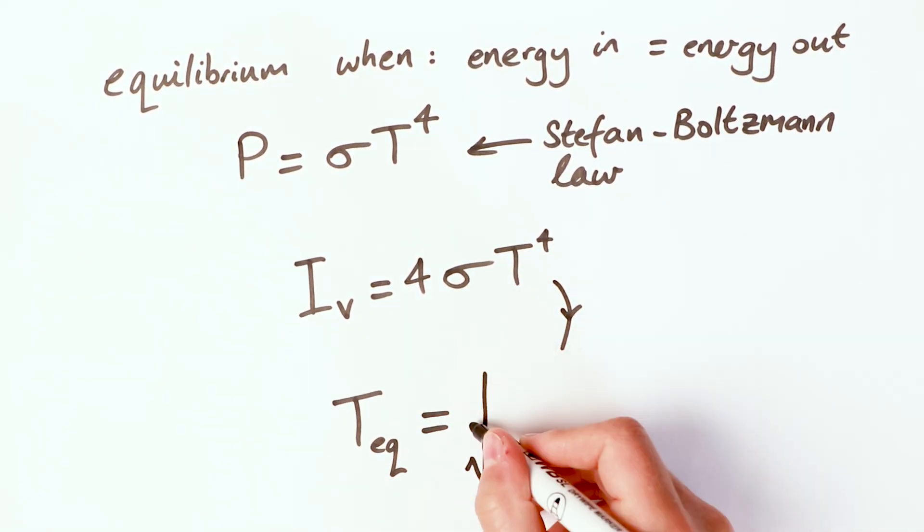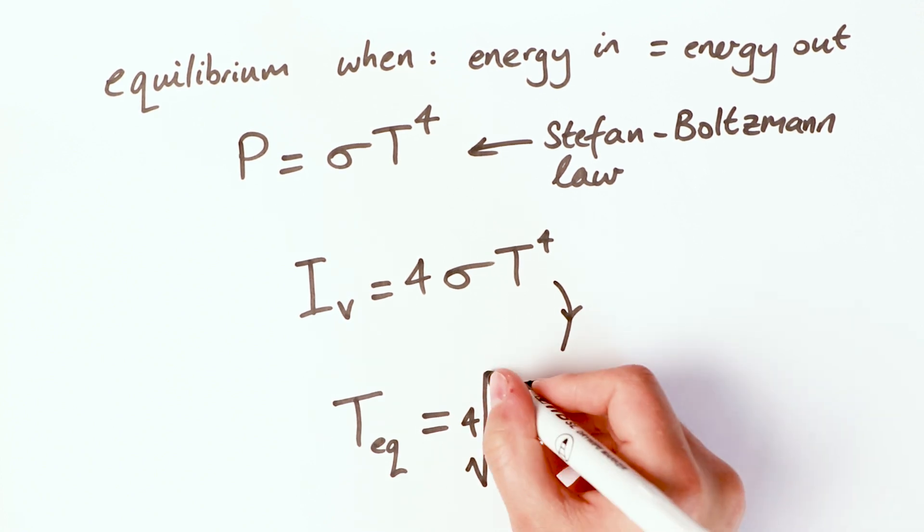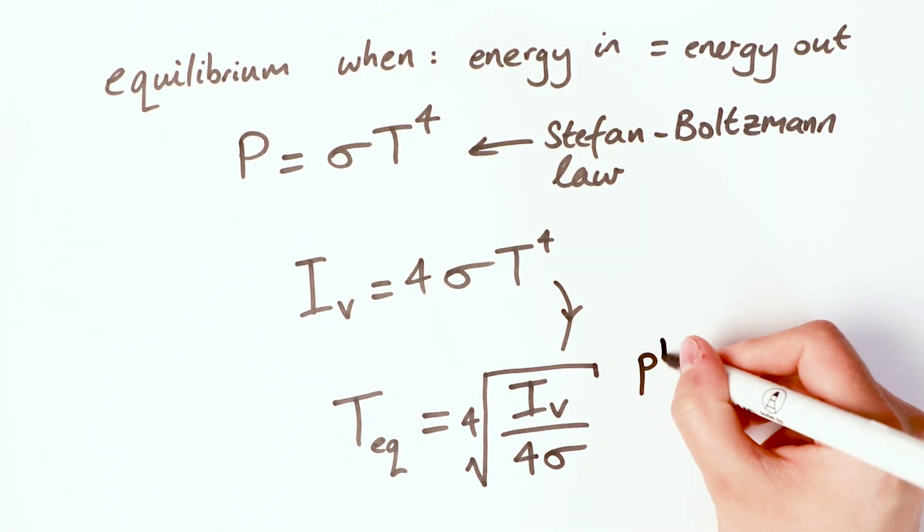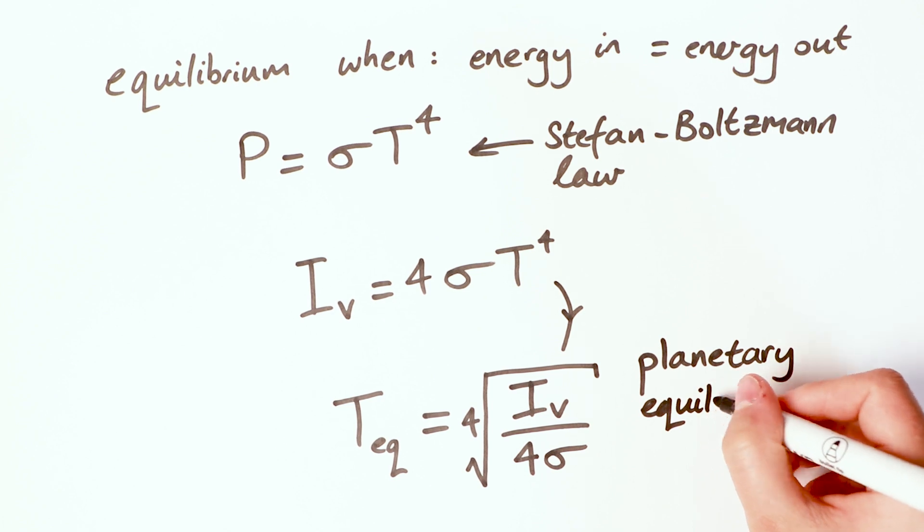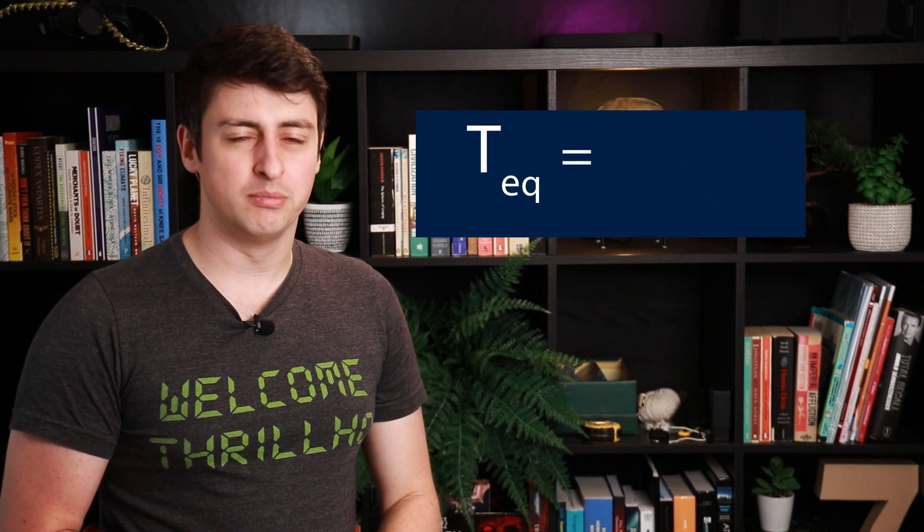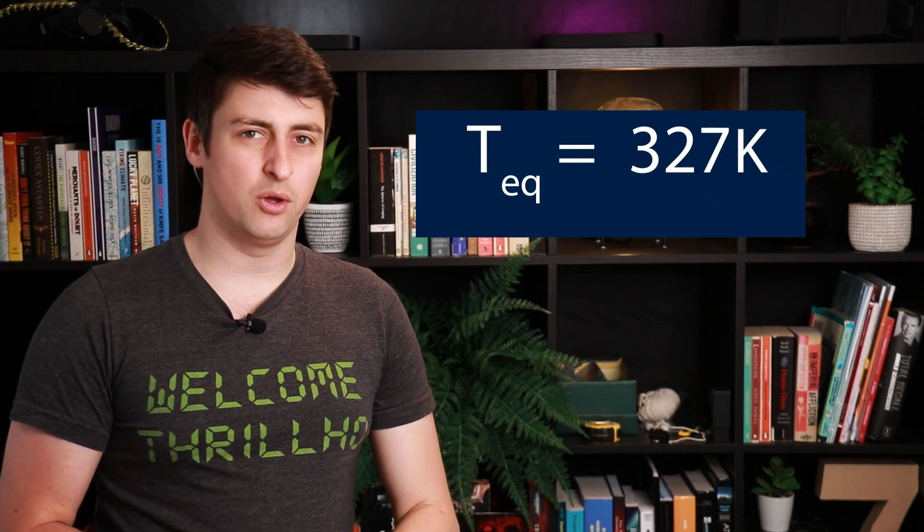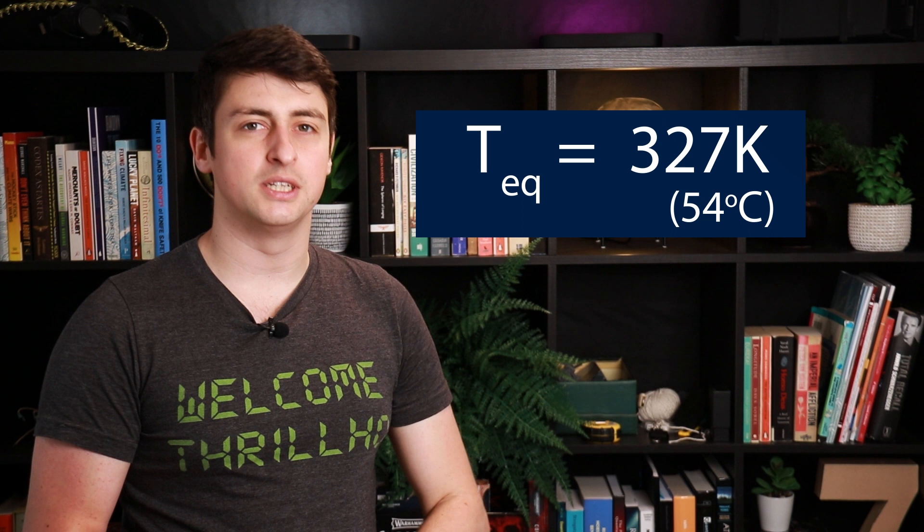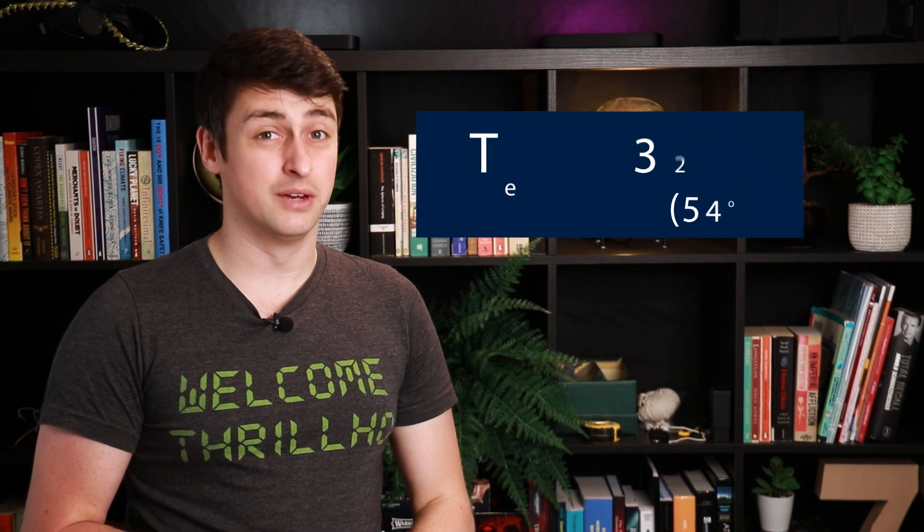Now, if we set this equal to the amount of energy a planet receives per square meter from the Sun, and account for the fact that the planet only receives this energy on its day side, but emits energy all over, all the time, we get an equation for the predicted temperature of the planet, technically called the planetary equilibrium temperature. Plugging in the amount of energy that Venus receives from the Sun into this equation, we get a planetary equilibrium temperature of about 327 Kelvin, or 54 degrees Celsius, and this is the temperature we observe the top of Venus' atmosphere to be.